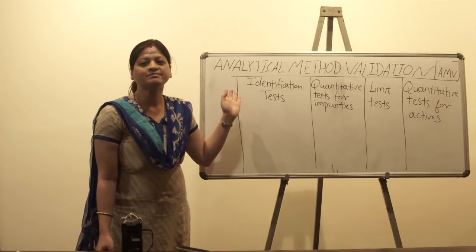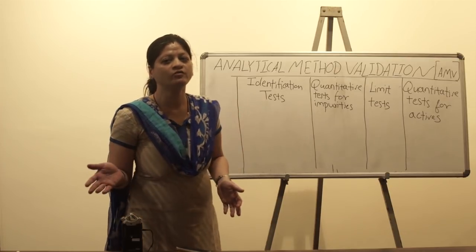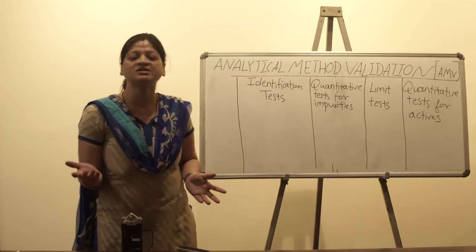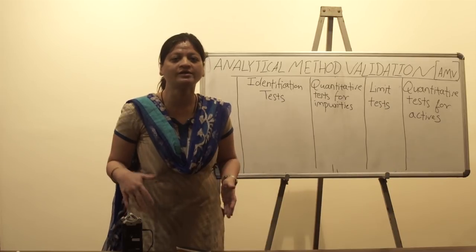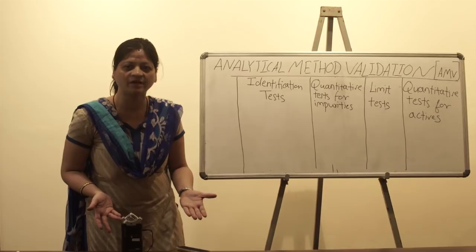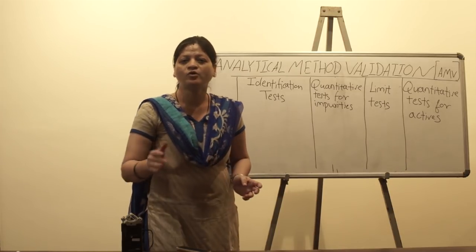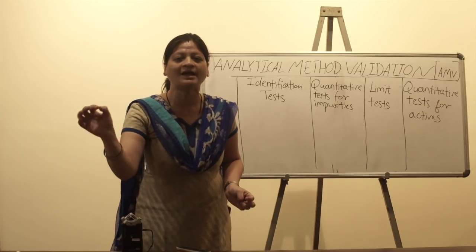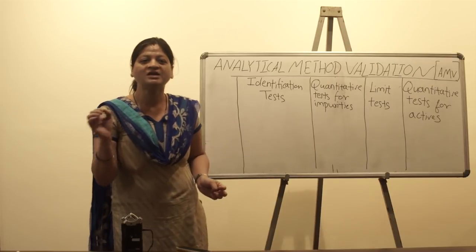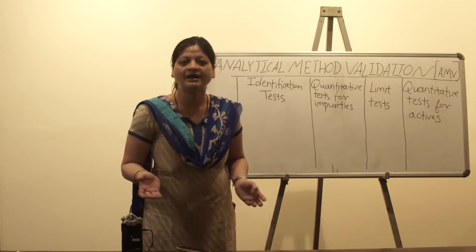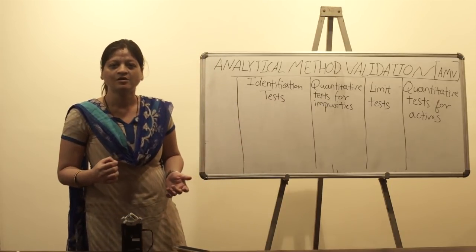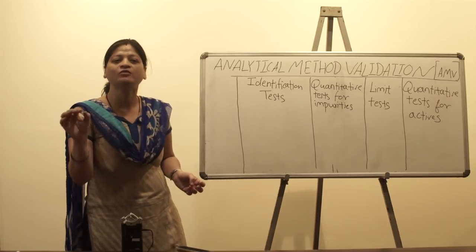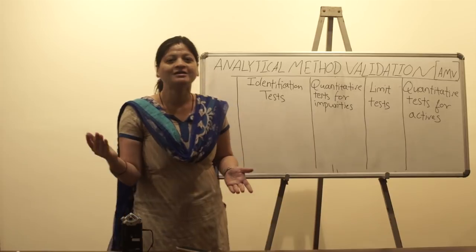Now we will see what is meant by analytical method validation. Validation is providing documentary evidence that whatever you intend to do is proved as per a set specific purpose. In layman's terms, if I ask you your height, I'm not expecting an approximate figure but an accurate value, so you would need a measuring device like a tape. If you give an approximate figure like 5 feet or 6 feet, that is not validation.